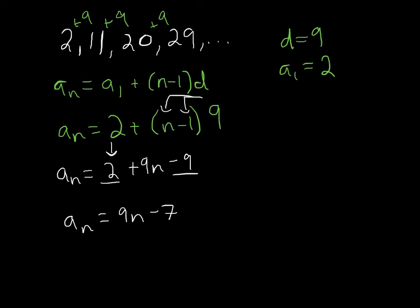So, you may not notice it like this, but if I change a_n to y and the n to x, hey, that's y = mx + b right there. That is a straight line where the slope is 9 and the y intercept is negative 7.